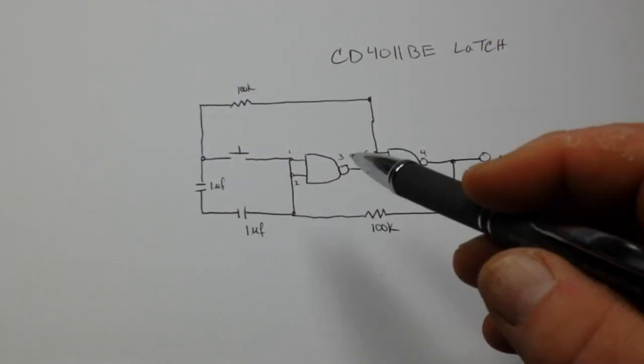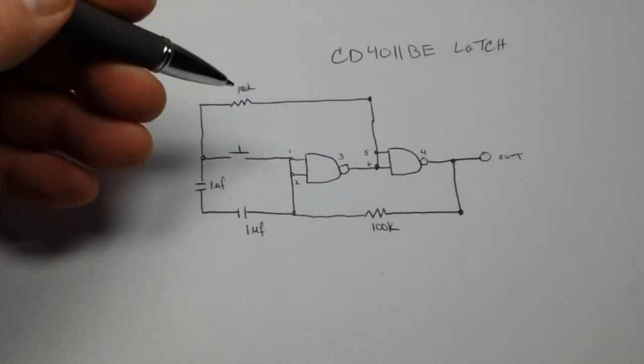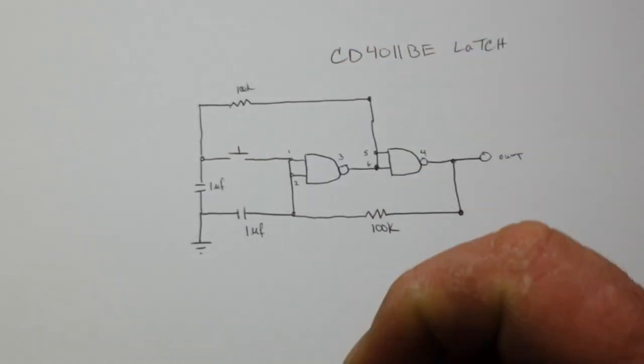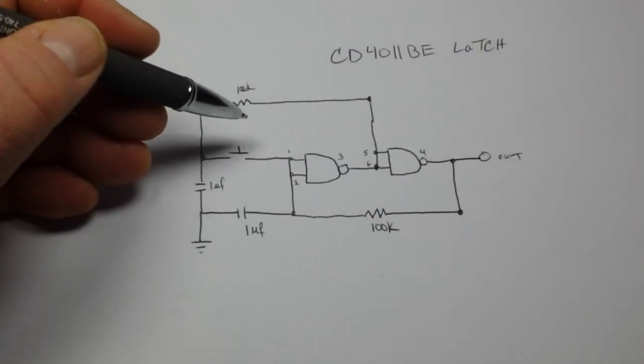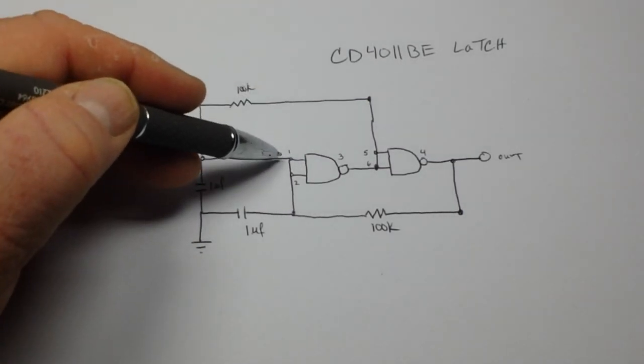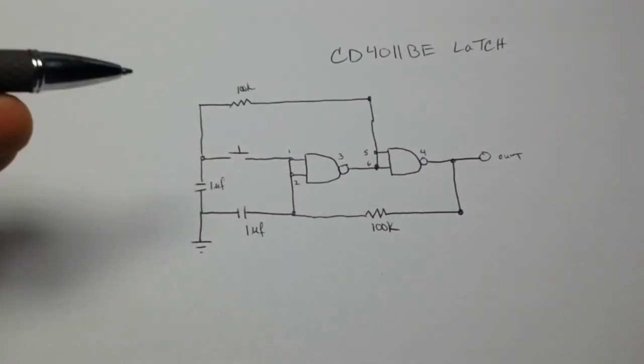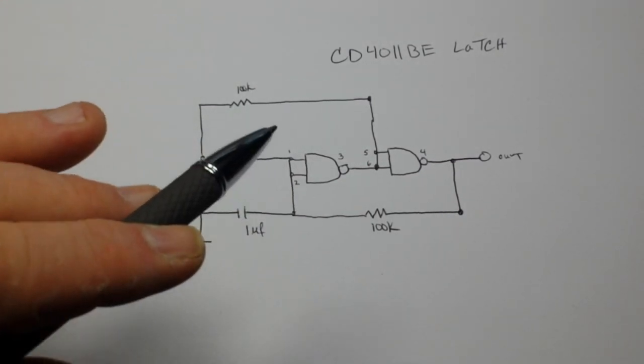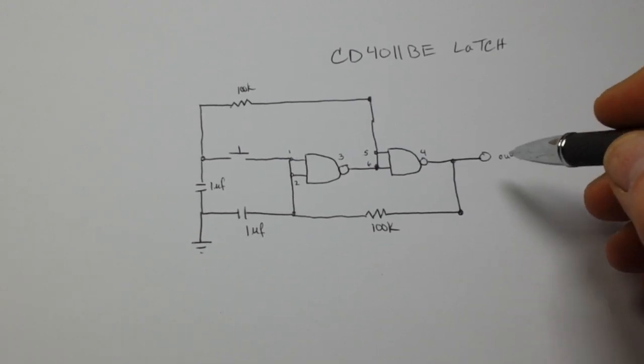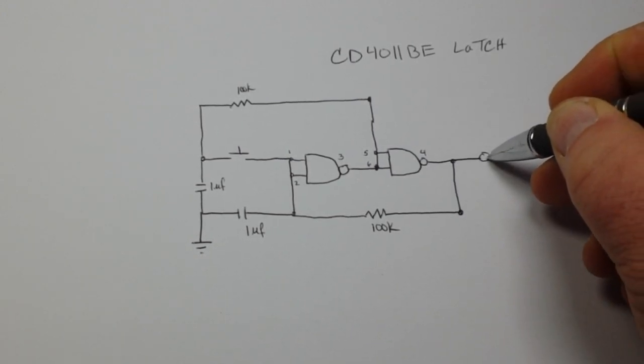What happens is when you press the button, this capacitor is initially going to ensure that the input on this first gate goes low. Afterwards it's going to swap between low and high, low and high.